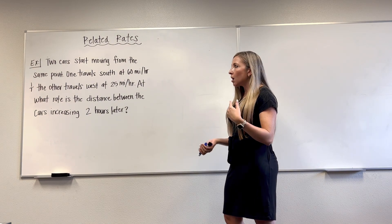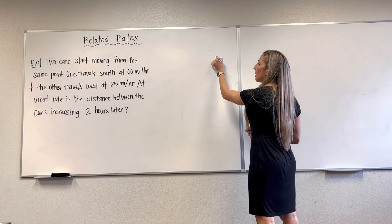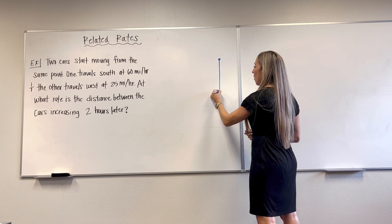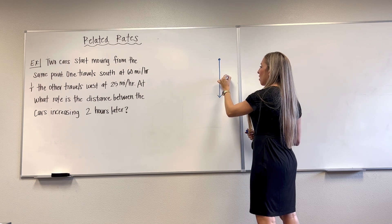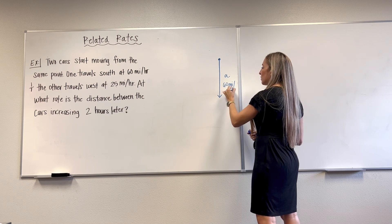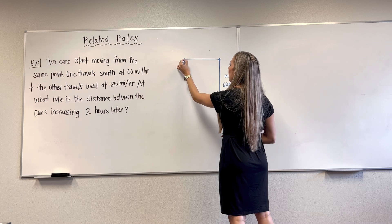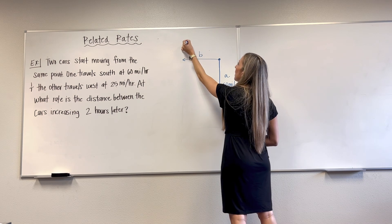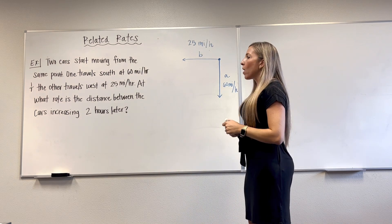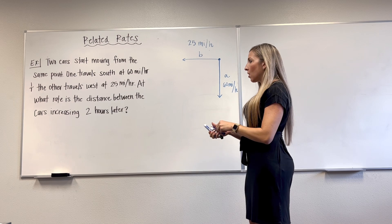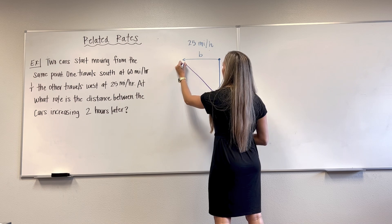Alright, so we've got two cars, I'll call them cars A and B, and they start off at the same point. One is traveling south at 60 miles per hour. So I'll say this is car A. And then the other one's going west at 25 miles per hour. So this will be car B, it's traveling 25 miles per hour. And then the problem asks, at what rate is the distance between the cars increasing two hours later? So the distance between the two cars is right here.